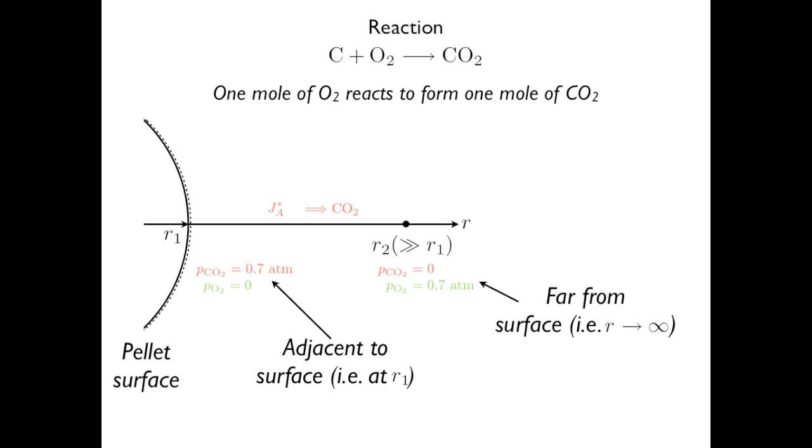If we consider CO2 to be component A, it diffuses away from the particle surface. To provide oxygen to the reaction, oxygen must diffuse back toward the surface. We consider oxygen to be component B.